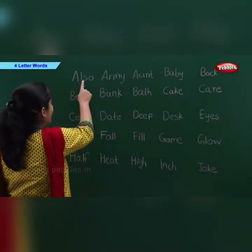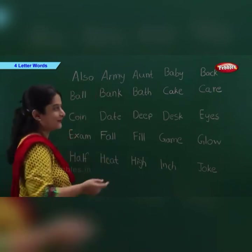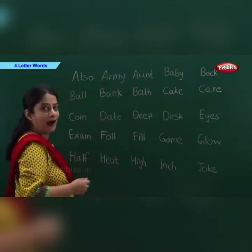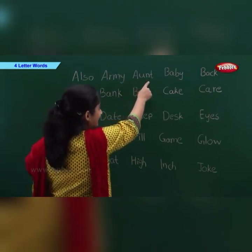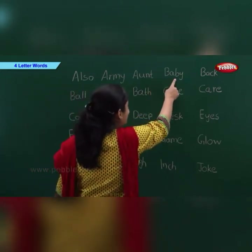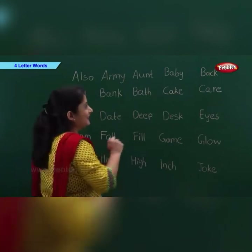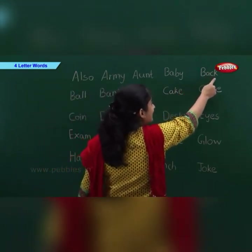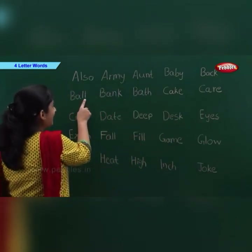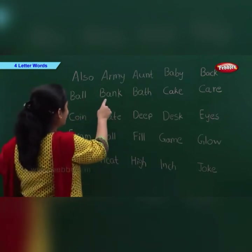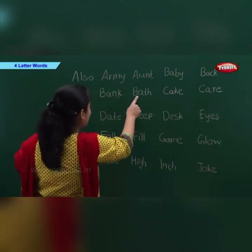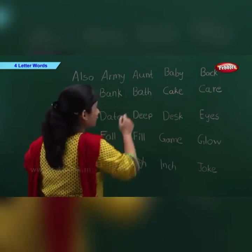A-L-S-O: Also. A-R-M-Y: Army. A-U-N-T: Aunt. B-A-B-Y: Baby. B-A-C-K: Back. B-A-L-L: Ball. B-A-N-K: Bank. B-A-T-H: Bath.